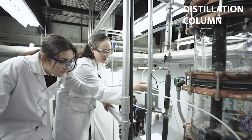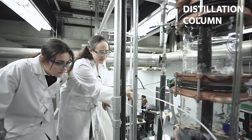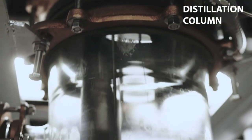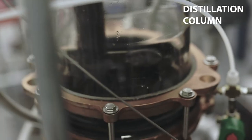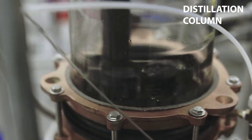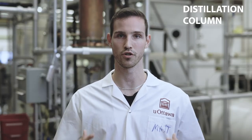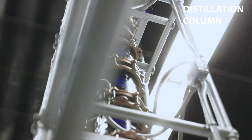Distillation columns are one of the most commonly used units within chemical engineering. They work by separating components based on their relative boiling points. One of the common industries that distillation columns are used in is the petroleum industry, where they're used to separate hydrocarbons in the production of fuels.